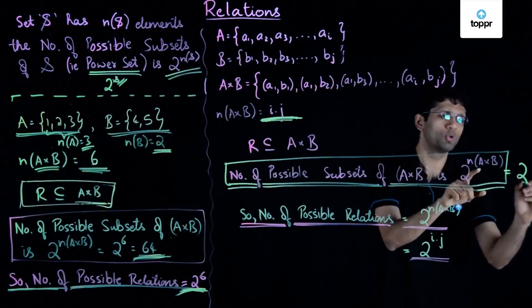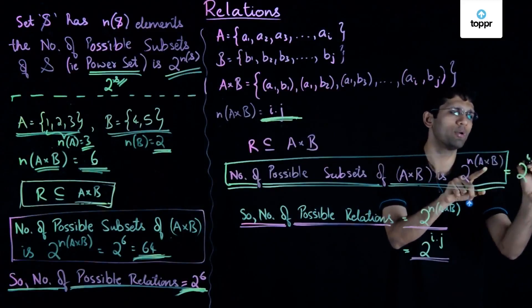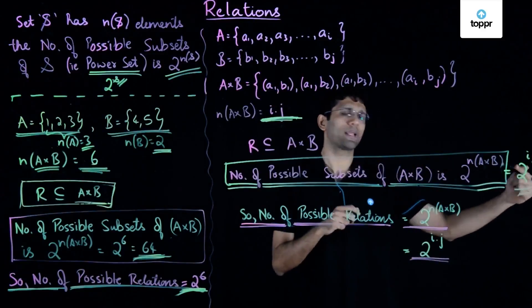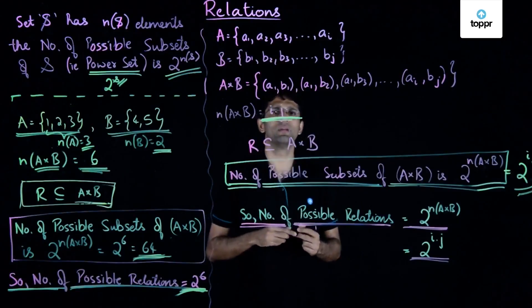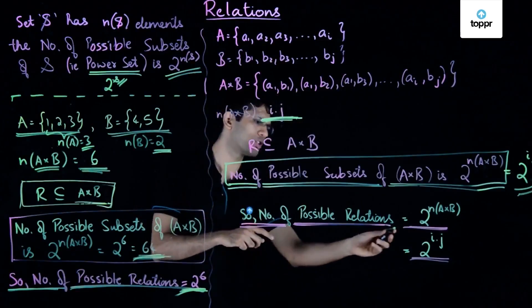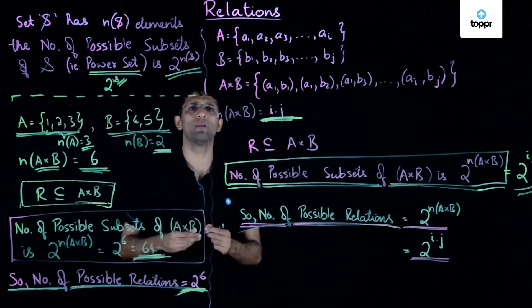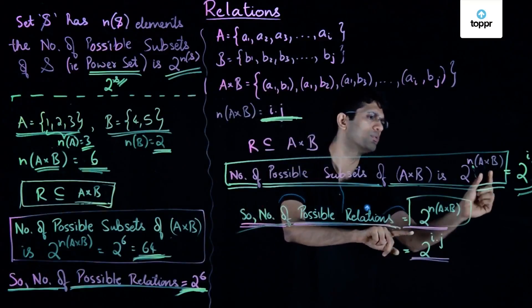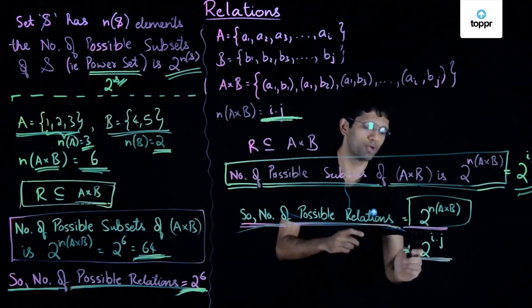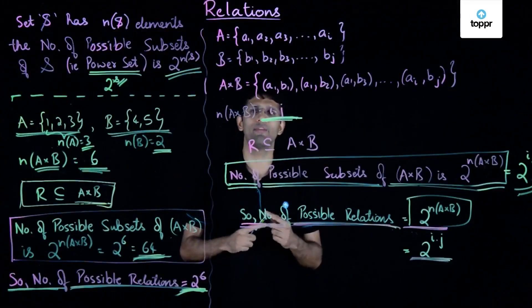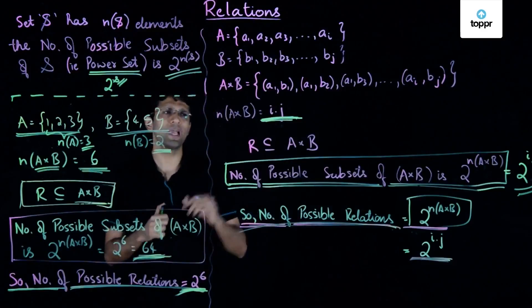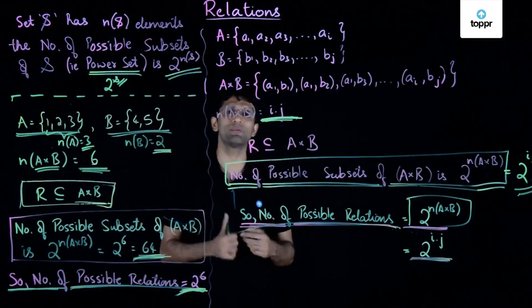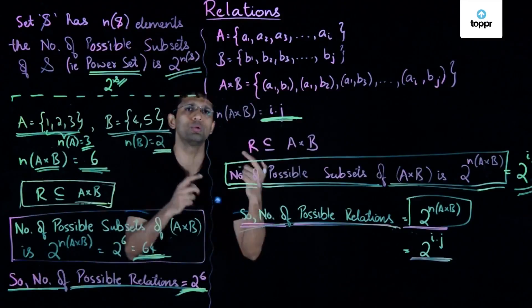We can rewrite this as 2 raised to n(A cross B) equals 2 raised to I into J, which is the number of possible subsets of the Cartesian product of sets A and B. Since the number of possible subsets is also the number of possible relations between A and B, the number of possible relations is equal to 2 raised to n(A cross B), which equals 2 raised to I into J. The key result: when A cross B has I into J elements, the maximum number of different possible relations between A and B is 2 raised to I into J.